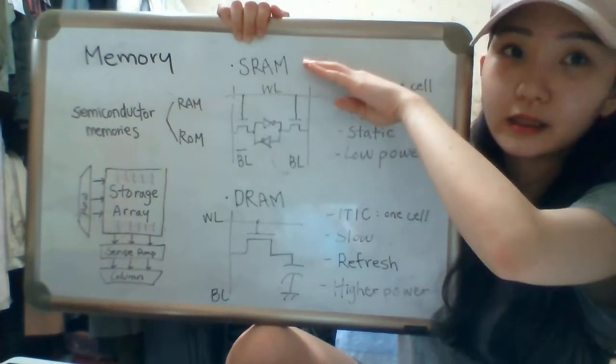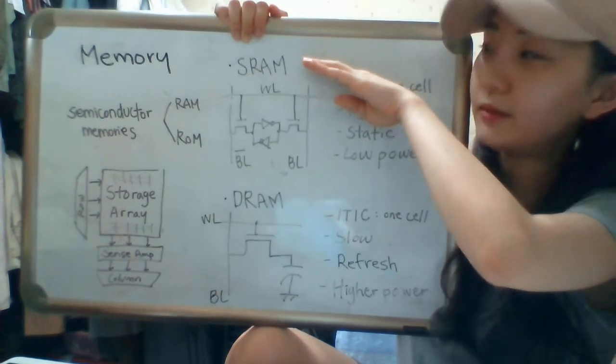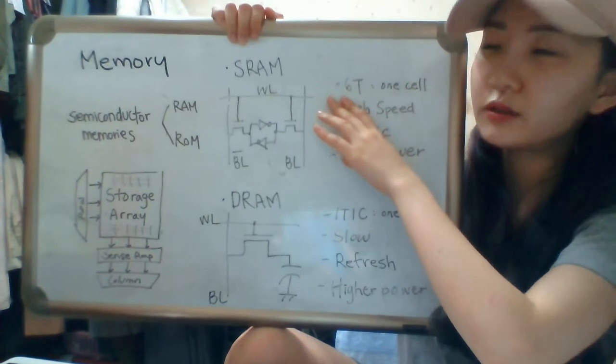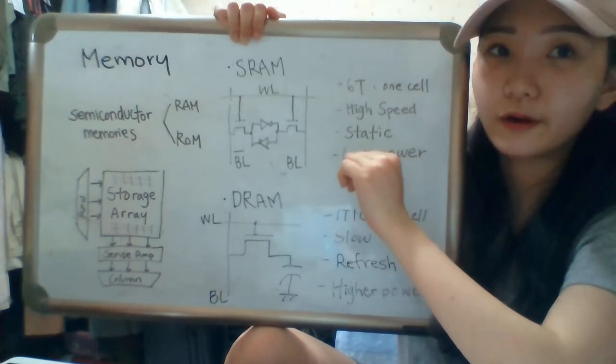SRAM is static random access memory. It has 6 transistors as one cell: 2 PMOS and 4 NMOS.